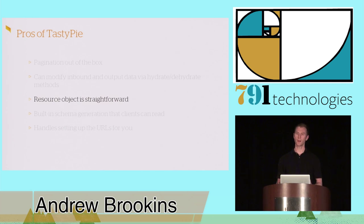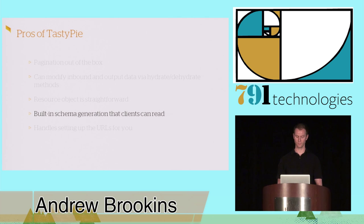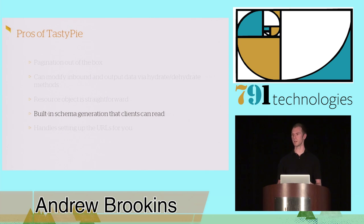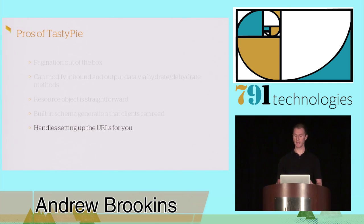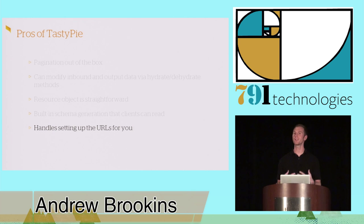We found the resource object you subclass to be relatively straightforward in terms of its APIs. One cool thing about TastyPie — which is still cool — is that it will generate a schema based on your API automatically. If you have a client that can do something with that schema, it's pretty helpful for client-side validation, alongside your server-side validation. It also handles setting up the URLs for you, which is kind of a double-edged sword — nice and fast, but not necessarily Pythonic since I like having my URLs pretty explicit.